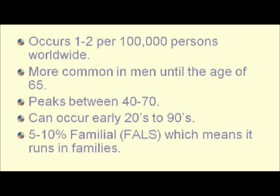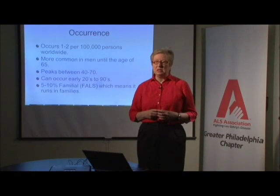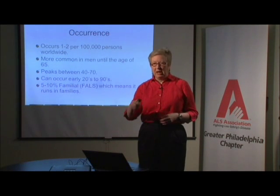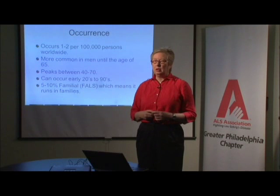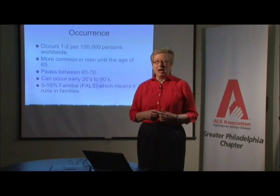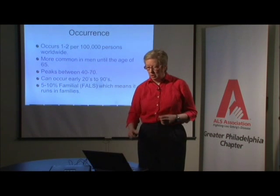About 5 to 10% of all people with ALS have the familial form — that's FALS, familial ALS. That means they've been able to identify at least one blood relative who had the illness and passed it on. If the person with ALS has the familial form, any of their children have roughly a 50% chance of developing the illness.